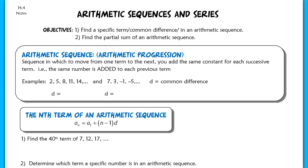This lesson is for section 14.4. We're going to be talking about specific types of sequences: arithmetic sequences as well as arithmetic series. The first objective for today is to find a specific term or the common difference for an arithmetic sequence. And then on the back page, we are going to be finding partial sums of arithmetic sequences.